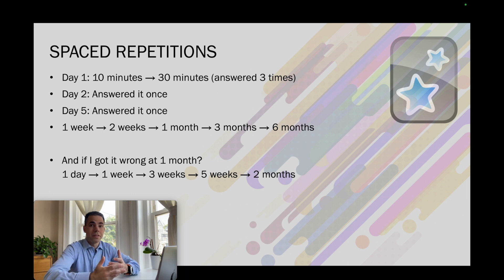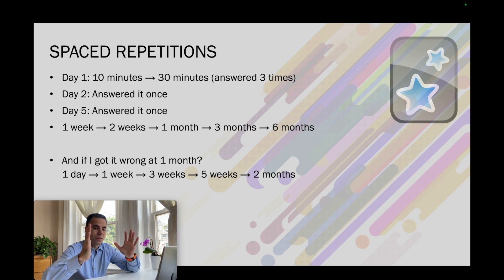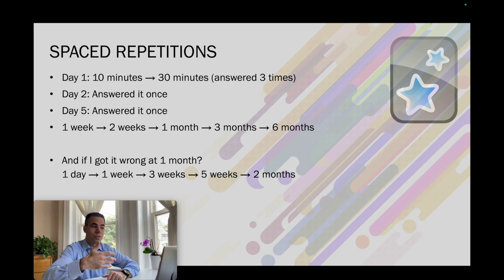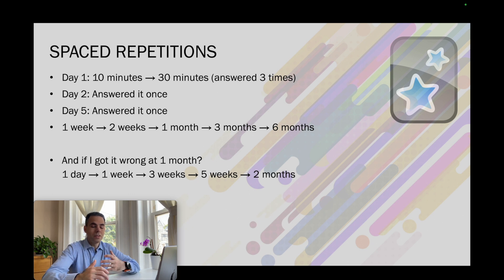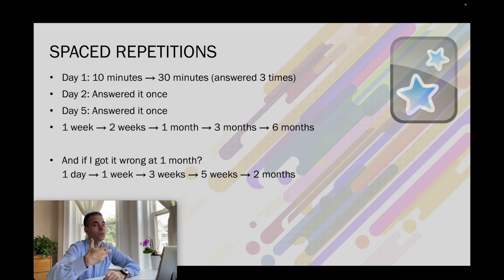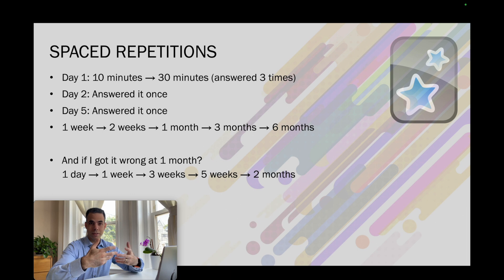What happens if you get the answer wrong? Then the spaces between repetitions become much smaller. If you got it wrong, you'll see the question after one day instead of two, after one week instead of two weeks, after three weeks instead of one month, and so on. In this way your neurons work together in a spaced manner, and the more you encounter the question, the stronger the connection becomes between those neurons.